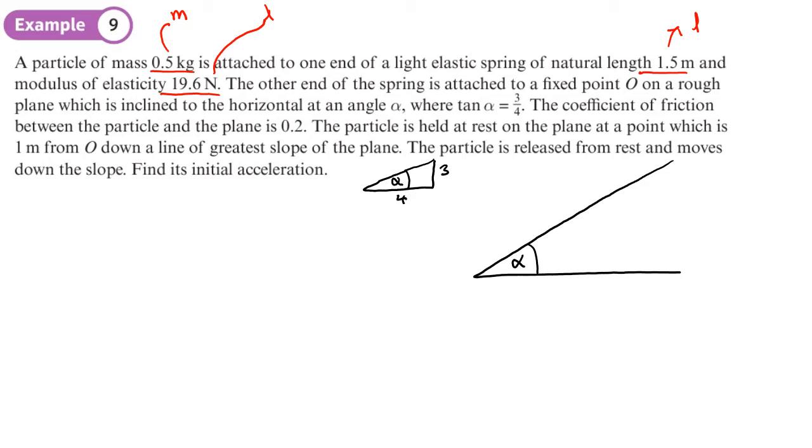tan alpha is 3 quarters. Opposite over adjacent, so that's 5. So sin alpha is 3 over 5. Cos alpha is 4 over 5.